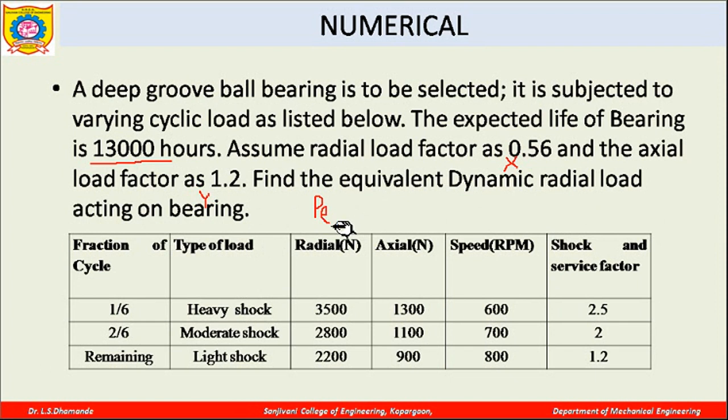The table is like this: In the first column is the fraction of cycle, like 1/6 fraction. This is a heavy shock with Ka value 2.5. Next is the fraction of cycle 2/6, moderate shock during this period with Ka equal to 2. For the remaining fraction of cycle there is light shock with service factor 1.2.